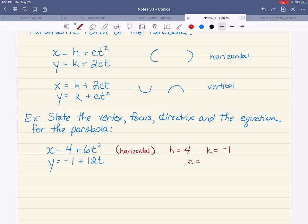Now my next question is, what is c? Now if you look at the formula, notice that it says h plus c t squared, four plus six t squared. Well, it's right there. The coefficient on the squared term is your c. So in this case, that's c equals six.